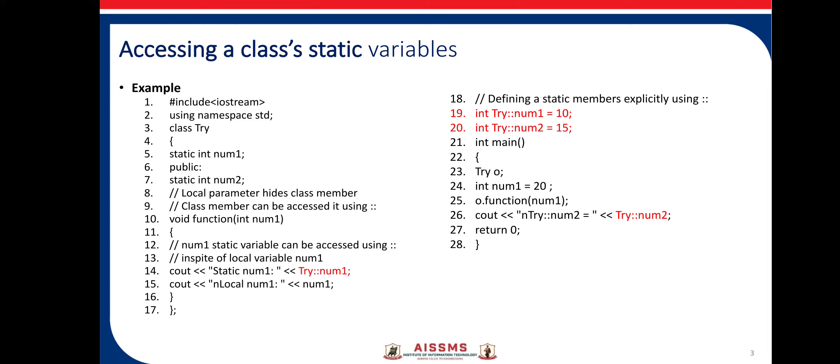The syntax is: first we need to write down the class name, then the Scope Resolution Operator, and the member variable which is defined as static. That's why the syntax is: class name, Scope Resolution Operator, and num1. At line number 15, only num1 is written, because at this instance we are accessing only the local variable which is declared for the void function. Similarly, the static variable is accessible at line number 19, line number 20, and line number 26. This is the first usage — the third overall usage — of Scope Resolution Operator.